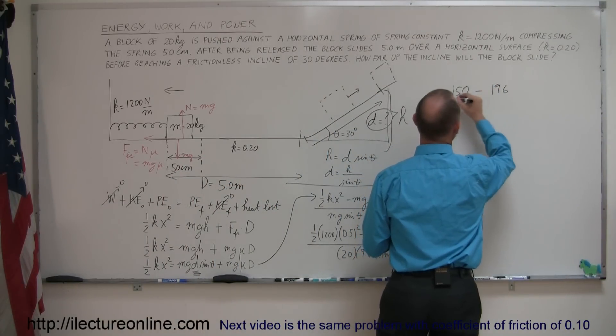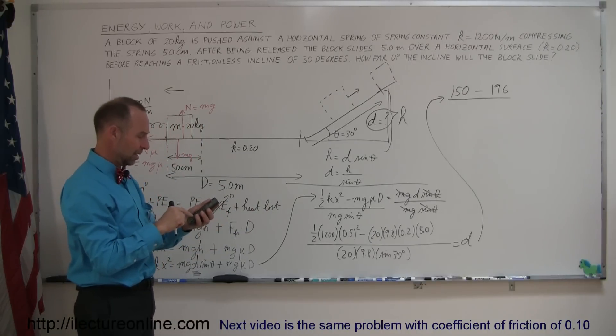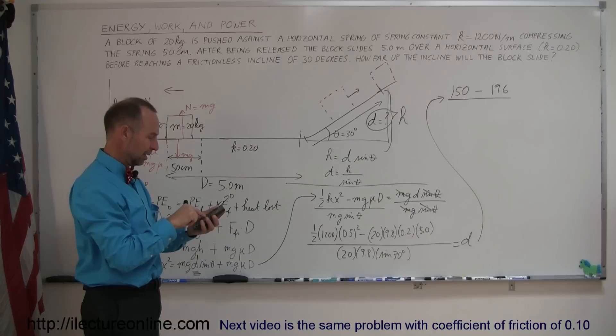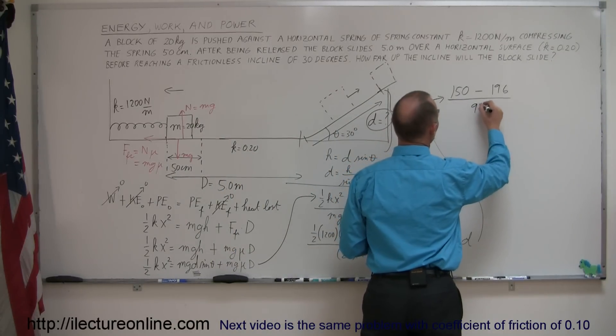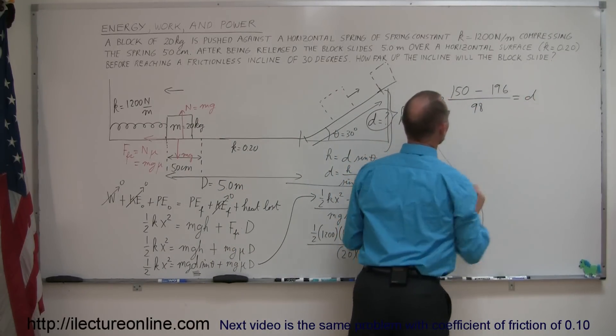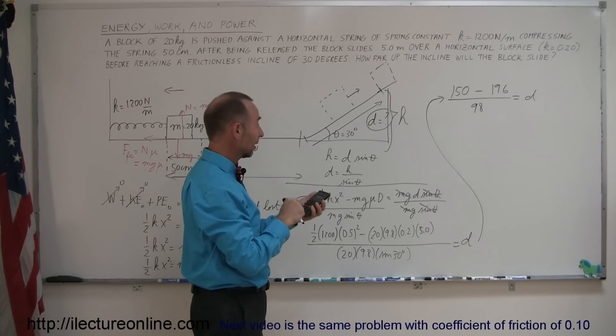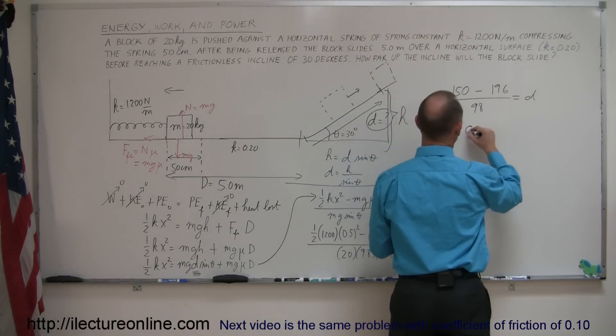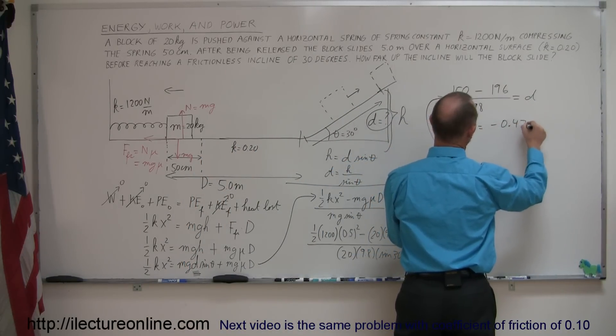Hmm, a negative quantity. Now that means something. We'll see in just a moment what that means. We're going to divide that by 20 times 9.8, times the sine of 30, which is 0.5, which is divided by 98, which is equal to the distance traveled. So what do we get here? We get 150 minus 196 divided by 98, and we get a distance equal to minus 0.47 meters.